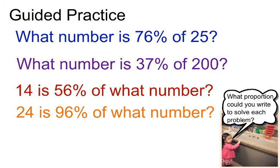Now it's your turn. So you have two problems where you're going to need to find part of a base, and two problems when you need to find the base. Remember base, bottom, base, bottom, that's your A over B. Again, don't forget to write down your proportion in A over B form equals a percent of 100. Rewriting it each time will really imprint that into your mind. So you have, what number is 76% of 25? What number is 37% of 200? 14 is 56% of what number? 24 is 96% of what number? Again, really analyze the wording on each of these.